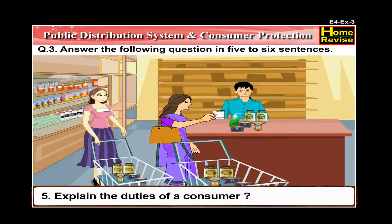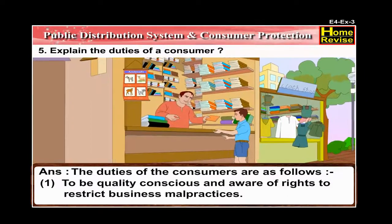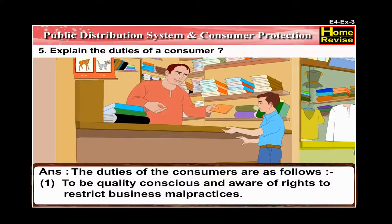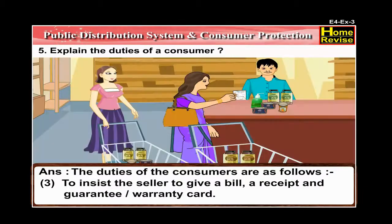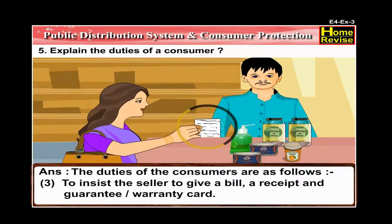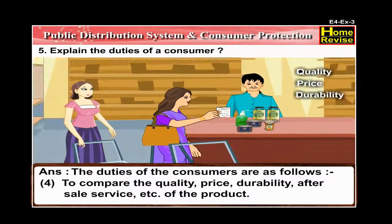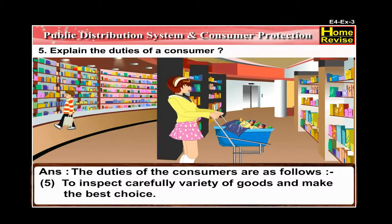Number 5: Explain the duties of a consumer. The duties of consumers are — number one, to be quality conscious and aware of rights to restrict business malpractices; number two, to be aware of misleading advertisements; number three, to insist the seller to give a bill, a receipt, and a guarantee or warranty card; number four, to compare the quality, price, durability, and after-sale service of the product; and number five, to inspect carefully a variety of goods and make the best choice.